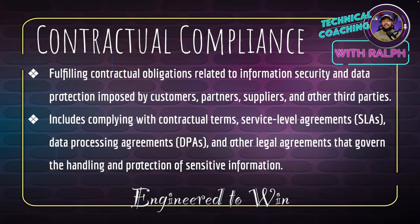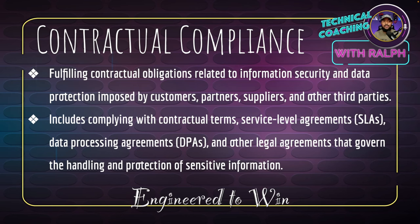Contractual compliance involves fulfilling contractual obligations related to information security and data protection imposed by customers, partners, suppliers, and other third parties. It includes complying with contractual terms, service-level agreements (SLAs), data processing agreements (DPAs), and other legal agreements that govern the handling and protection of sensitive information. You need to make sure, at least on your end, that you are keeping up with your end of the deal.